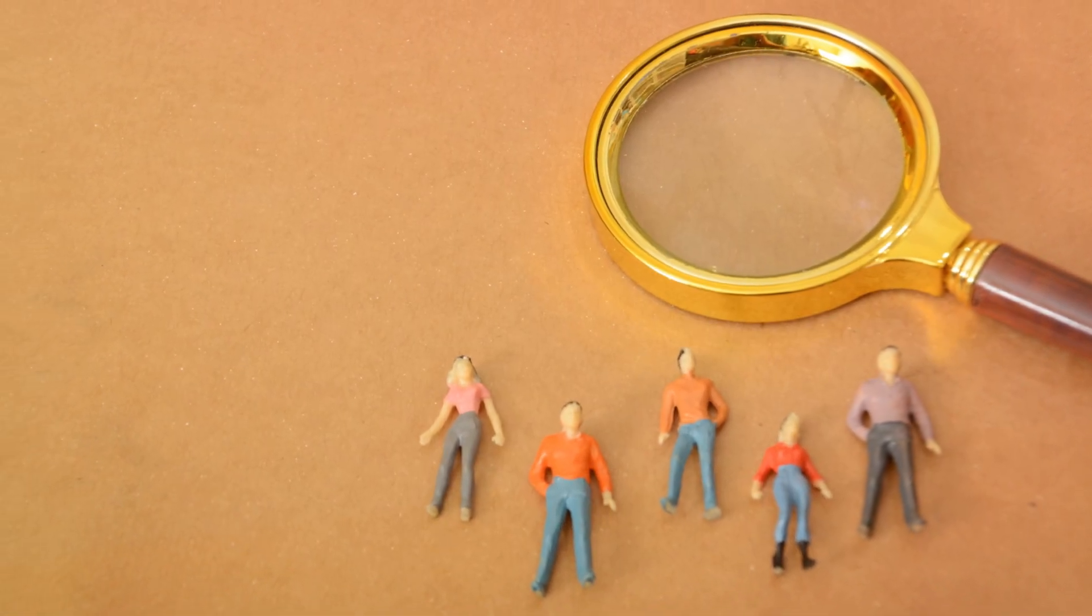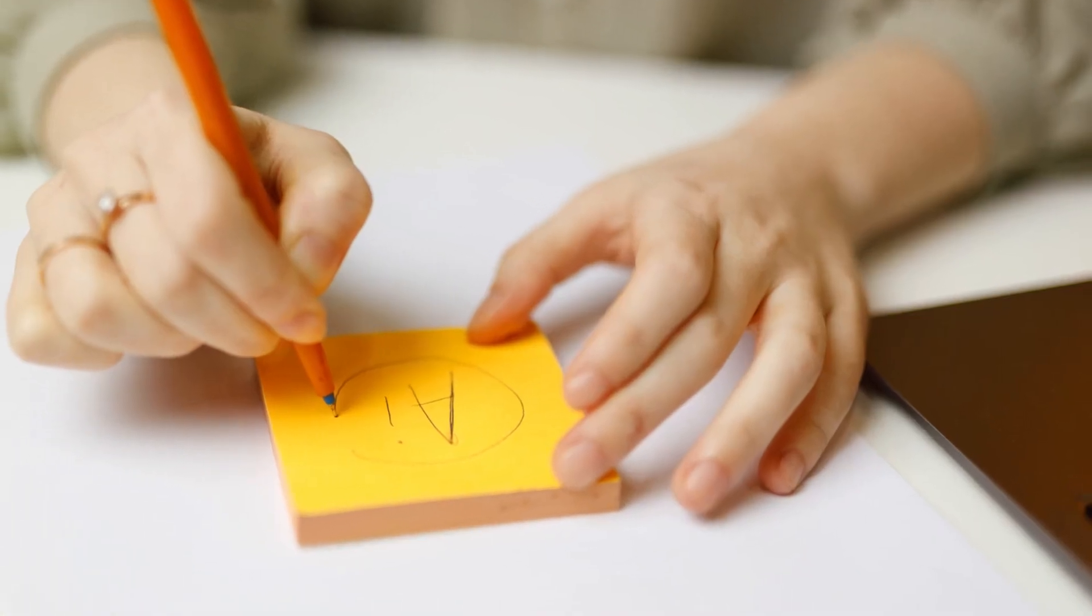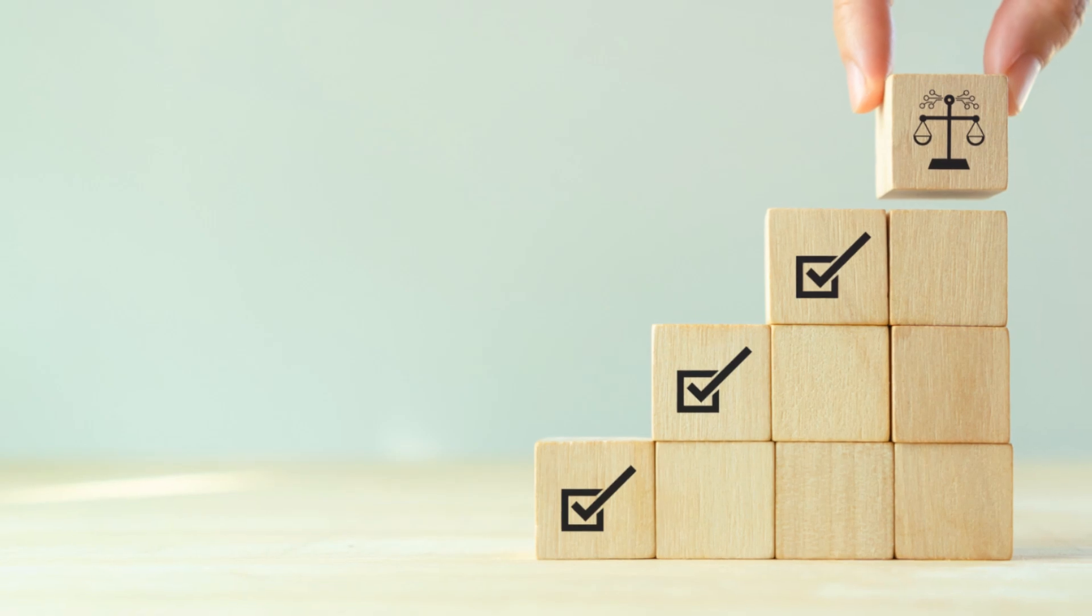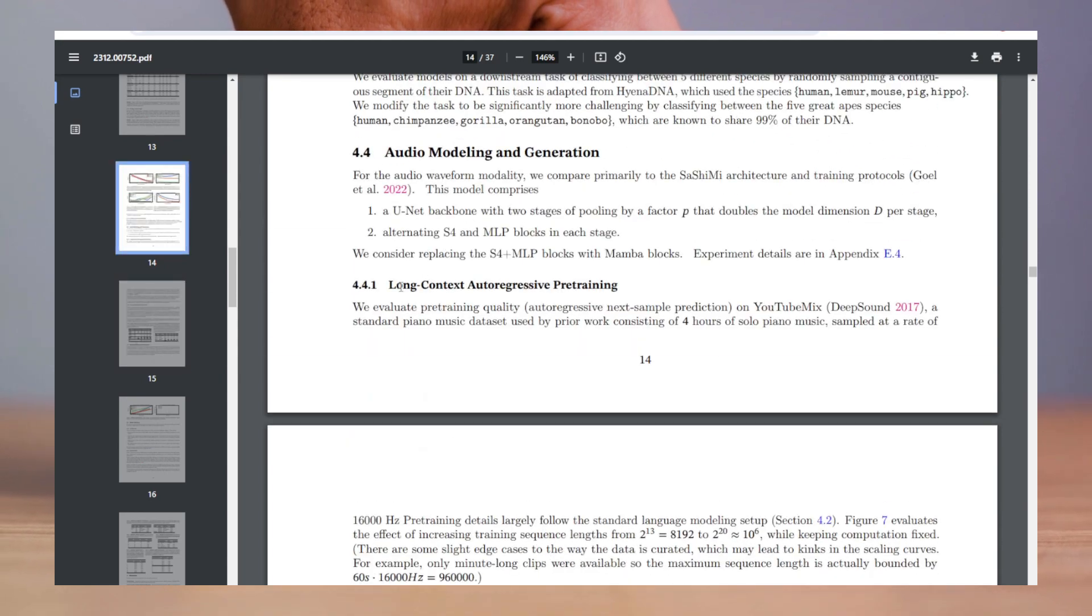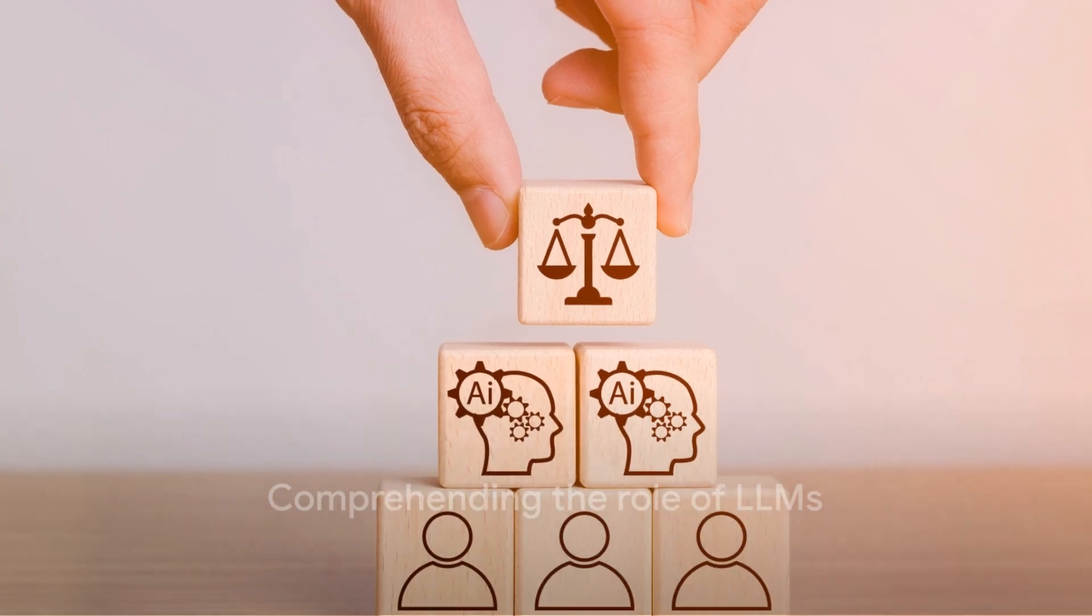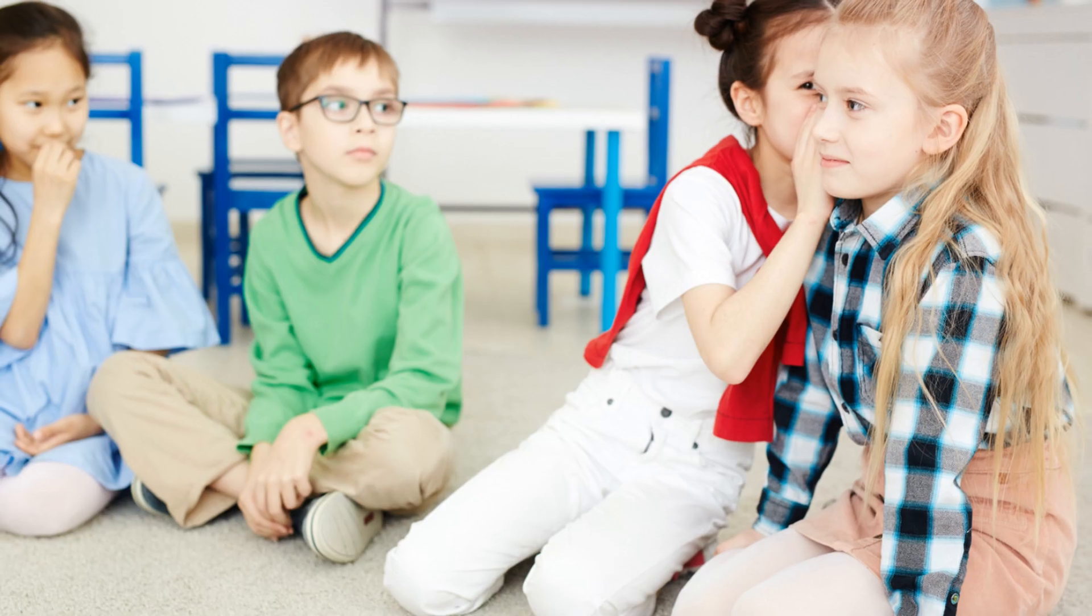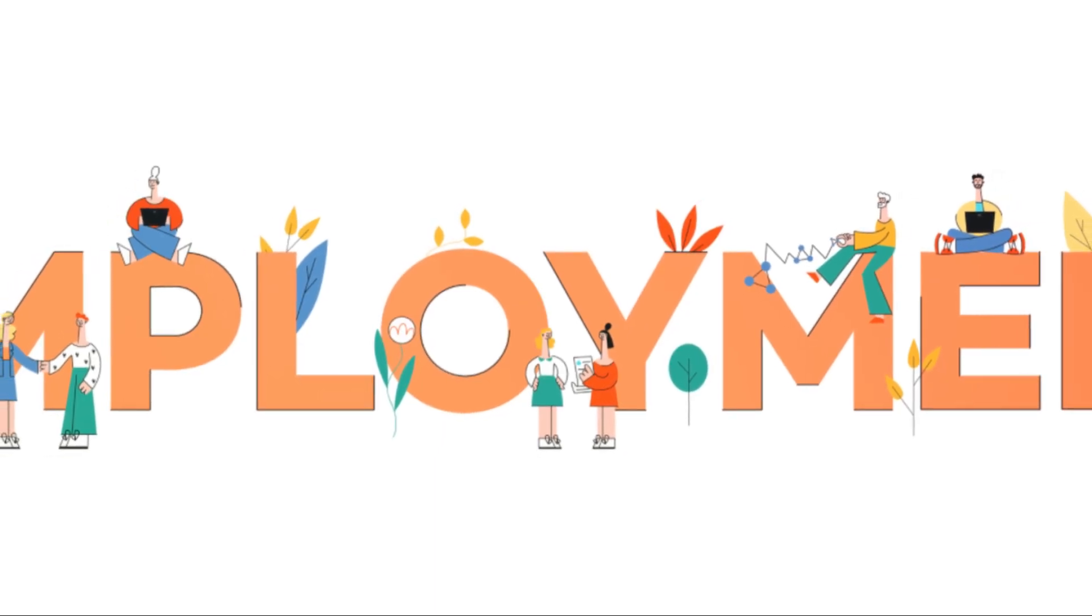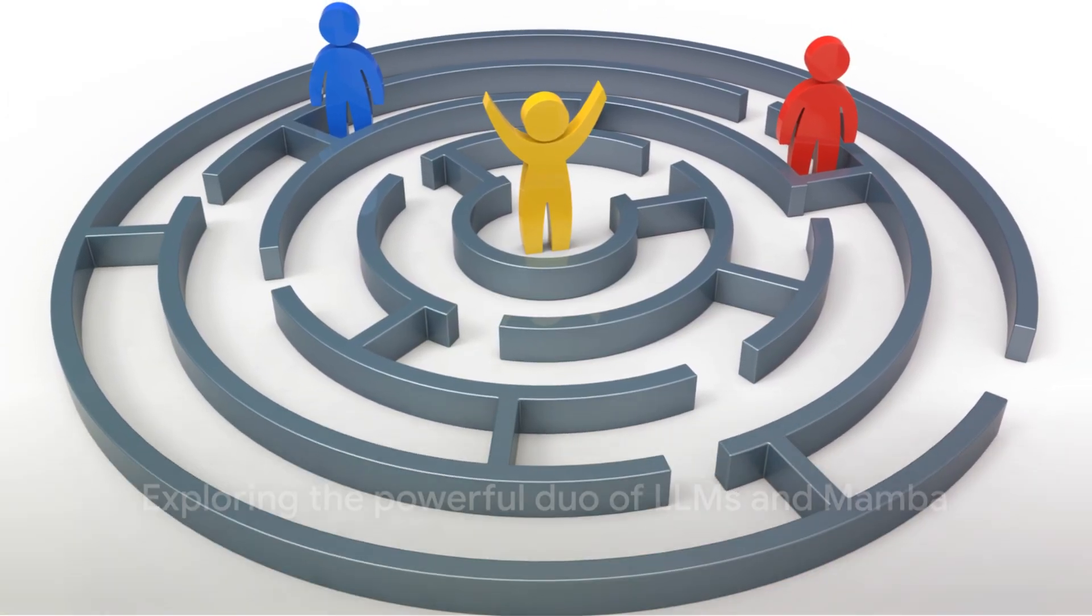The significance of LLMs in this equation cannot be overstated. They are the building blocks that Mamba uses to revolutionize the AI landscape. Without LLMs, Mamba's vision of bringing AI to the next level would be akin to trying to build a skyscraper without bricks. With this comprehension of LLMs, we can now move on to the crux of the matter. The interplay between LLMs and Mamba is a fascinating study of how two technologies can come together to create something greater than the sum of their parts. So, let's delve deeper into this powerful duo in our next segment, stay tuned.